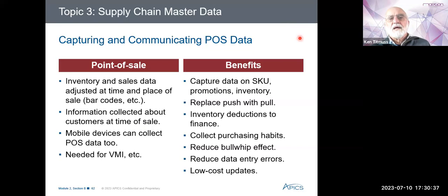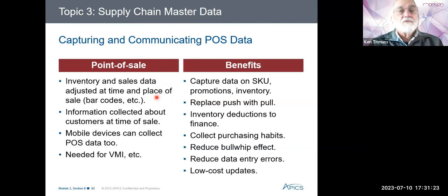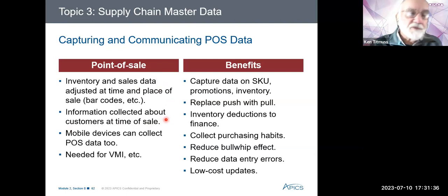Capturing and communicating point of sale data: POS data can be used to alter inventory levels, compute sales data, and collect information about customers. This can be a barcode or magnetic strip at a cash register or on a mobile device. Vendor managed inventories and similar systems rely on data capture at the point of sale — the vendor uses this information to plan replenishment. Point of sale inventory and sales data are adjusted at the time and place of sale — exactly what happens when you check out of the supermarket. If you've got a loyalty card, the company knows who you are and what things you like to buy.